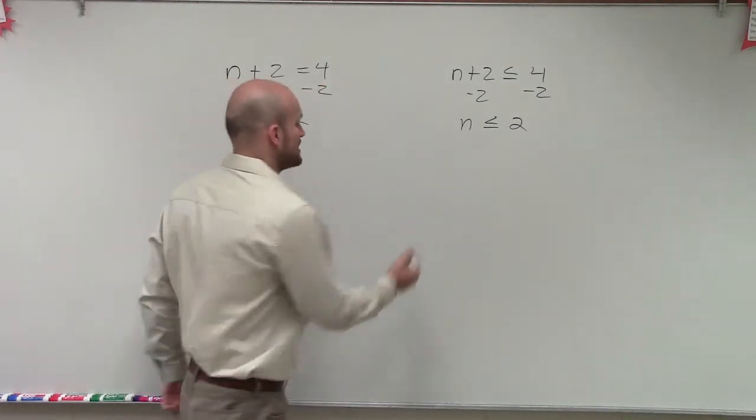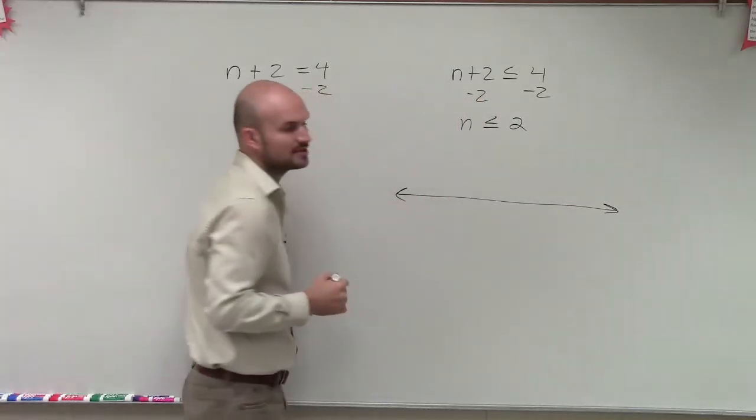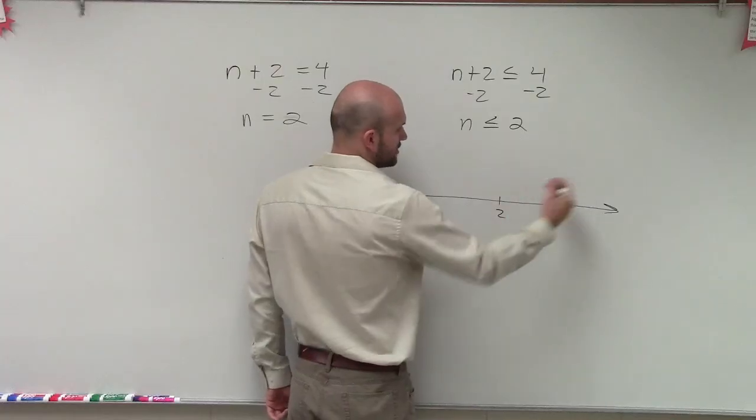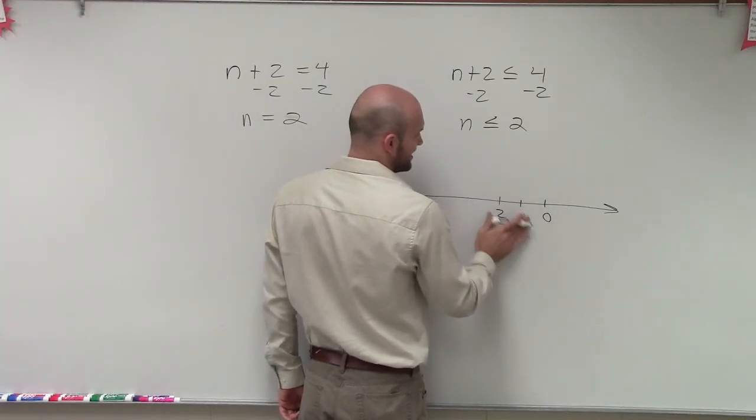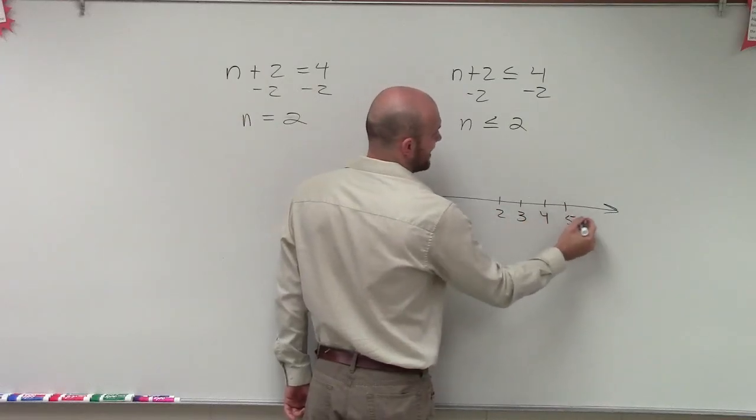So therefore, we're going to use a graph, a simple line graph, to represent this solution. So what I'll do is I'll start with 2 here. And then I'll go in the positive direction, which would be... not that direction, 3, 4, 5, 6.